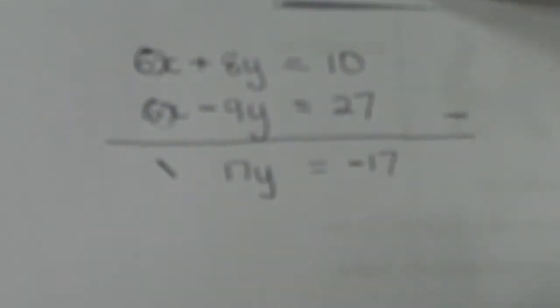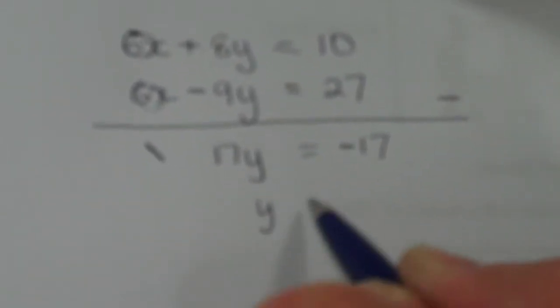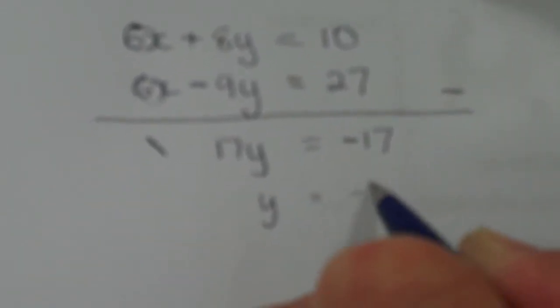Now I can solve this equation by dividing by the number in front of y. So y is minus 17 divided by 17, which means y equals minus 1. There's my first answer.